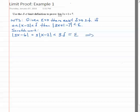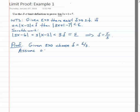So, let's write our proof, because we've found our delta. Given epsilon greater than 0, let's choose our delta to equal epsilon over 3. Now, let's assume that 0 is less than the absolute value of x minus 2, which is less than delta.